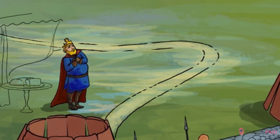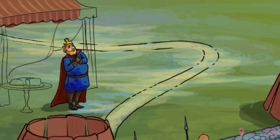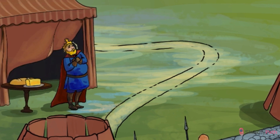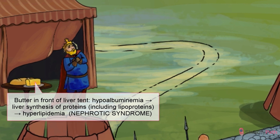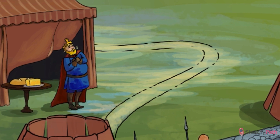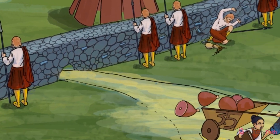Interestingly, nephrotic syndrome is also characterized by hyperlipidemia. It's thought that the liver senses the decrease in serum albumin and responds by pumping out a bunch of its own proteins, including lipoproteins, which ultimately leads to hyperlipidemia. Notice that a liver shape is incorporated into his battlefield tent back there — and look what's for lunch: lipids.